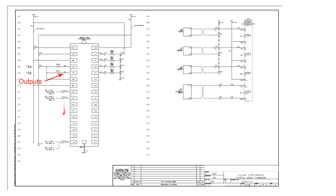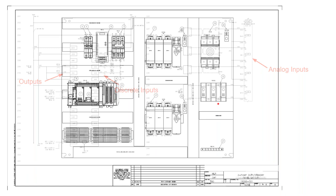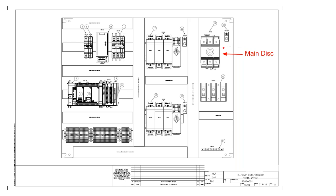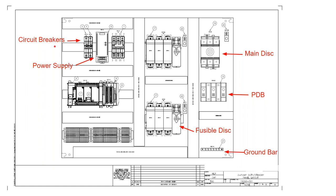On the outputs you can see the PLC control with various output relay coils. There are also discrete inputs, plus analog inputs — which are not on/off signals but rather continuous signals like temperature or pressure. All this information goes to the PLC to be processed in the program. In the actual panel build you can see the main disconnect, power distribution block, ground bar, fusible disconnects for the motors, circuit breakers for short circuit protection, and a power supply converting to 24VDC.